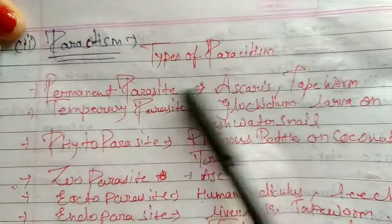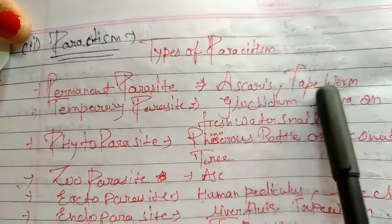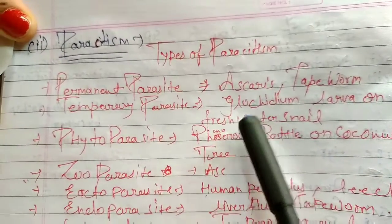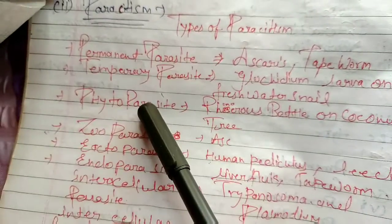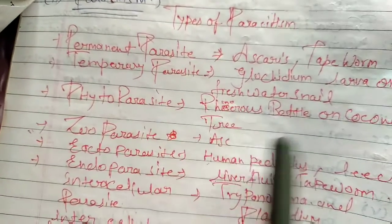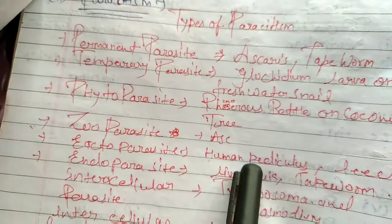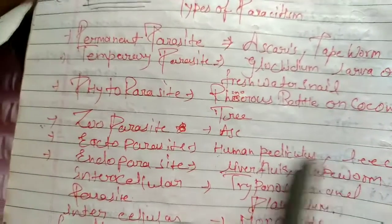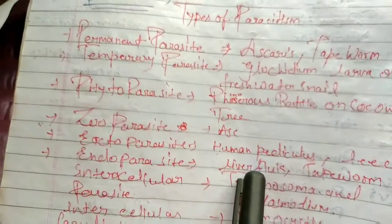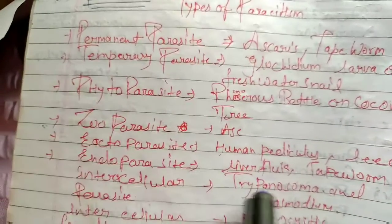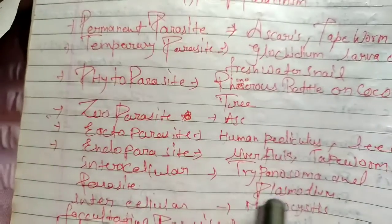There are types of parasitism we have discussed. Permanent parasites are always associated with the host, such as Ascaris and tapeworm. Temporary parasites include Clostridium larvae and freshwater snails. Phytoparasites include the rhinoceros beetle on coconut trees. Ectoparasites live outside the host body, such as human head lice (Pediculus). Endoparasites live inside the body, like liver fluke and tapeworm. Intracellular parasites include Trypanosoma and Plasmodium.